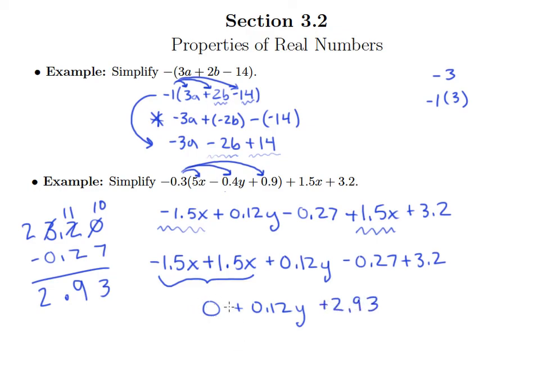We can drop this zero since it's just the additive identity. Our answer is 0.12y plus 2.93. There we go, that looks better. Thank you for watching.